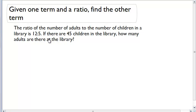Given one term and a ratio, find the other term. The ratio of the number of adults to the number of children in a library is 12 to 5. If there are 45 children in the library, how many adults are there at the library?